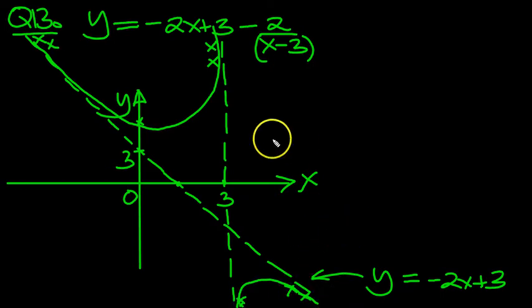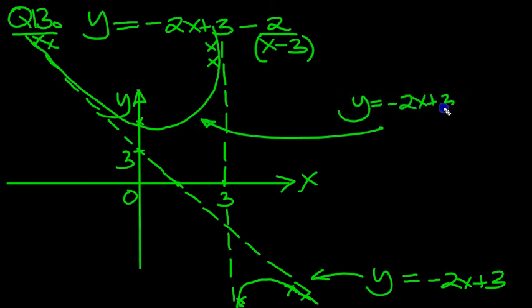That's what we've got. So this line, let's mark it off: y equals minus 2x plus 3, minus 2 all over x minus 3 in brackets.